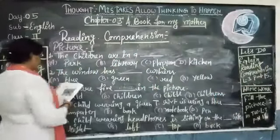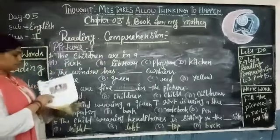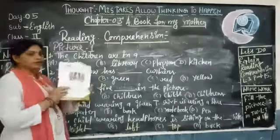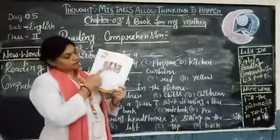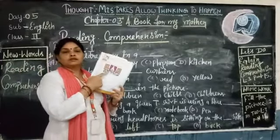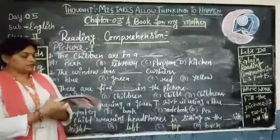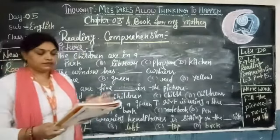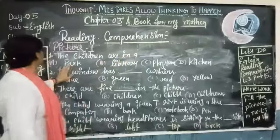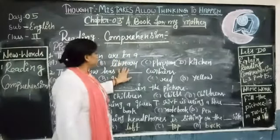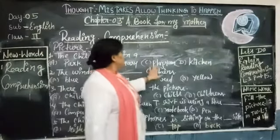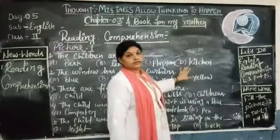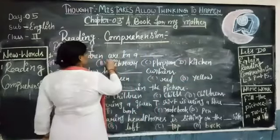Look at the slide also. Picture number 1 — look and answer. Number one: the children are in the — part, library, play, or kitchen. The right answer is library.